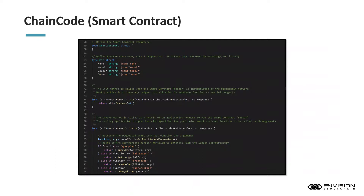'Chaincode' is another terminology you'll find within Hyperledger Fabric — chaincode is a smart contract. It's the name for a smart contract within the Hyperledger Fabric network. Just as we described with Ethereum, it's the same concept: it allows you to create codified business logic programs to make transactions across the network. Looking at a sample, lines 64 to 67 show a smart contract dealing with the automobile industry — with fields for car make, model, color, and owner.